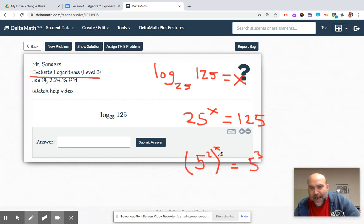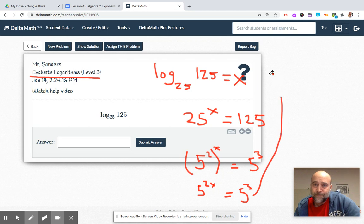An exponent to an exponent, that's laws of exponents. One level down from exponents means multiply, that's how I remember. So this turns into 5 to the 2x equals 5 cubed.